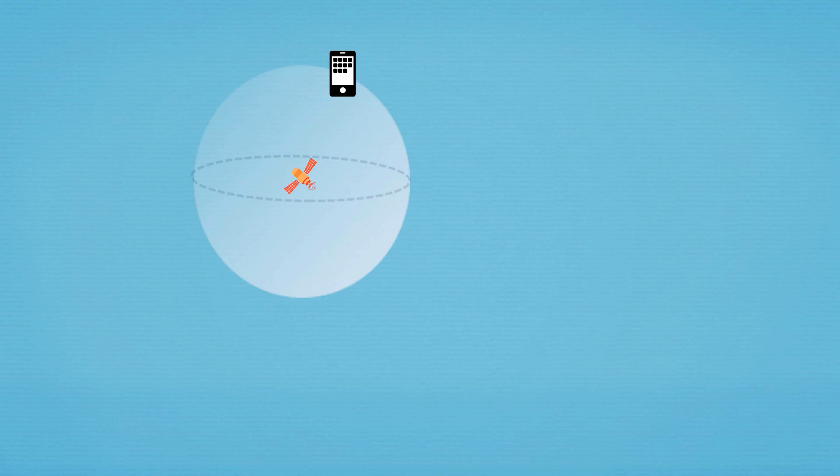So the GPS knows that it lies somewhere on a certain size sphere centered on where the satellite was. Now let's use a second satellite. Now the GPS knows that it falls on the intersection of two particular spheres. This means that the GPS lies somewhere on a circle in space.